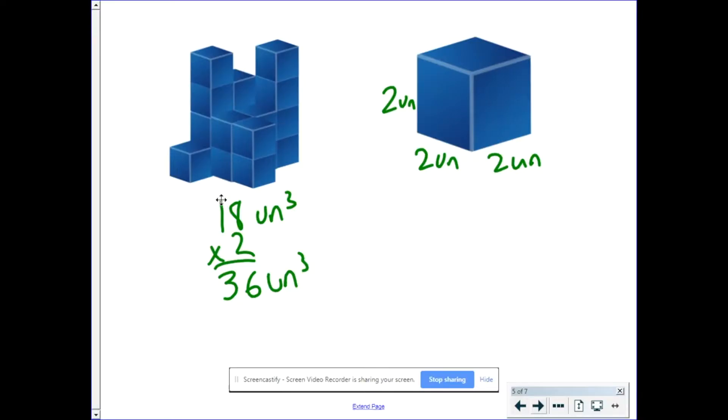But this is incorrect. First, I'm going to tell you why it's incorrect, and then I'm going to show you how to figure out the right answer. This is incorrect because you're not just changing one side length by two. You're actually multiplying the height by two, the length by two, and the width by two. So you're actually multiplying the volume by two three times.